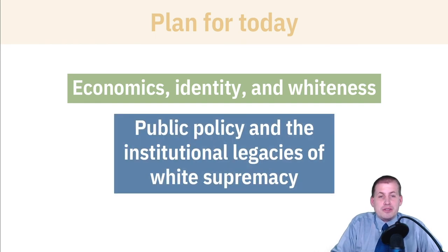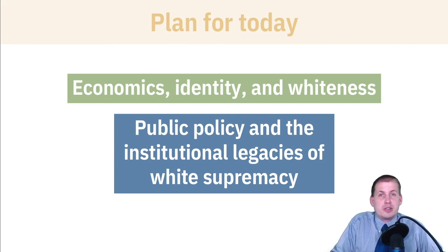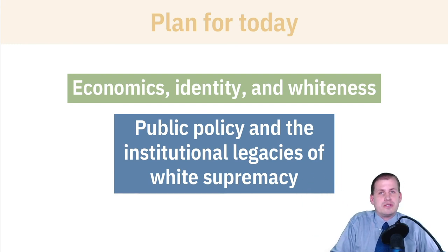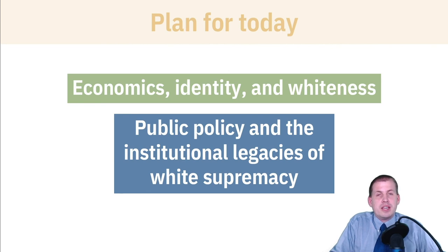This introduces the larger policy issue: the institutional legacies of white supremacy and slavery and how that influences our policies today. In your readings you looked at examples from Sandy Darity, Derek Hamilton, and Mursa Baradaran, explaining different policy answers to these larger issues of the institutional legacy of slavery and general white supremacy, and how we can fix that using economics and institutional thinking. So let's go ahead and start talking about identity.